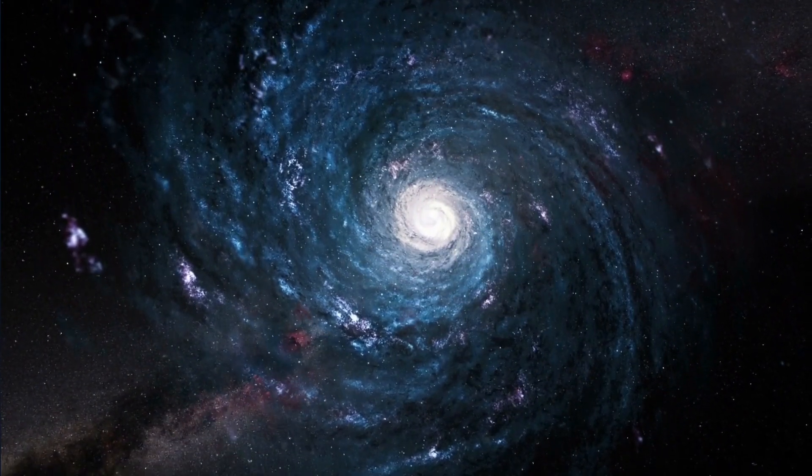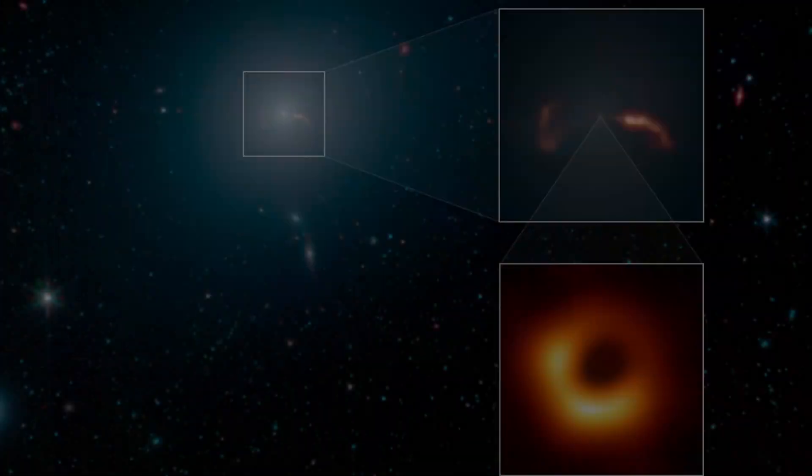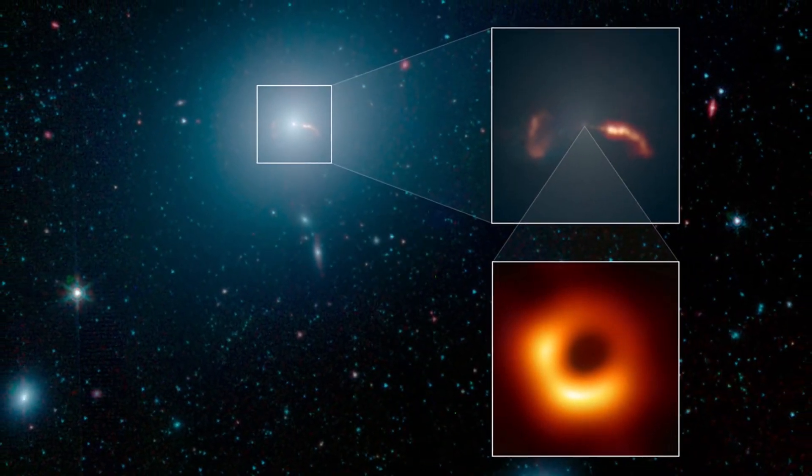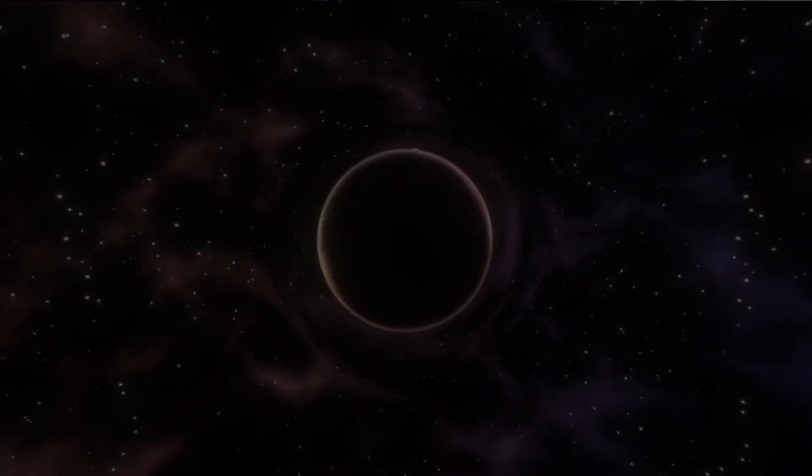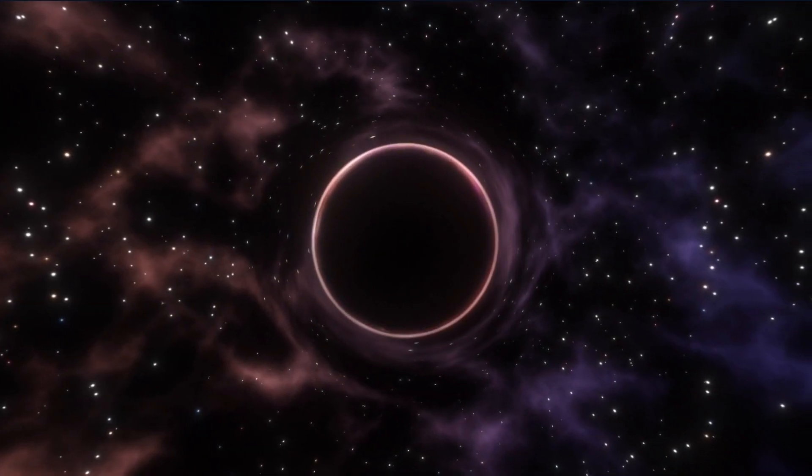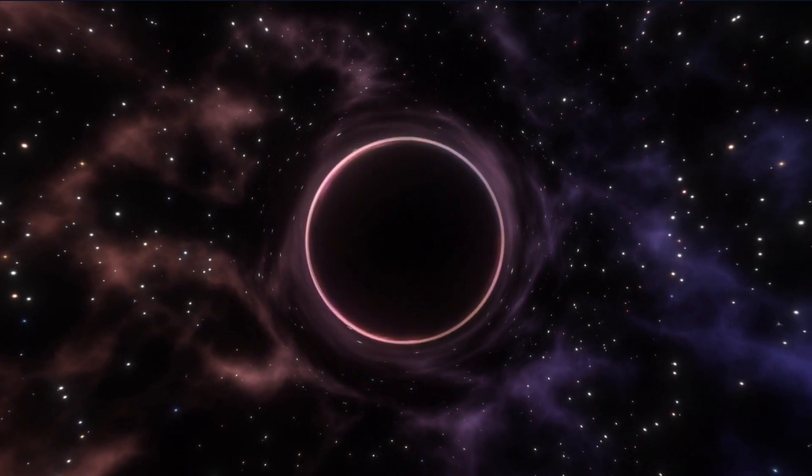The EHT released the first-ever image of the black hole at the center of the supergiant elliptical galaxy M87, which is in the constellation Virgo. It revealed a bright ring-like structure with a dark central region, the black hole's shadow.